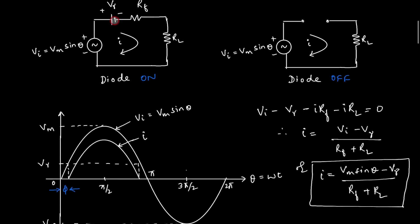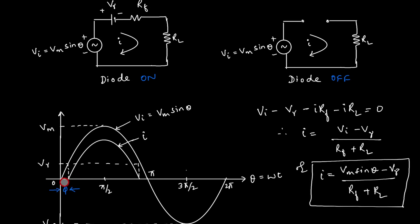The equation can also be written as: I = (Vm·sinθ − V_gamma) / (r_f + R_L). This is the important equation we use for calculating current in this kind of circuit. We must keep in mind that during the positive half cycle, the diode begins to conduct only when the sinusoidal voltage exceeds V_gamma. So when Vm·sinθ > V_gamma, current flows. If V_i is less than V_gamma — for silicon that is 0.6V, for germanium 0.2V — current is zero. Once input exceeds V_gamma, the diode starts conducting. There is a delay angle phi before conduction begins.